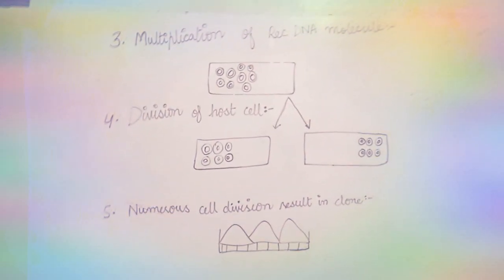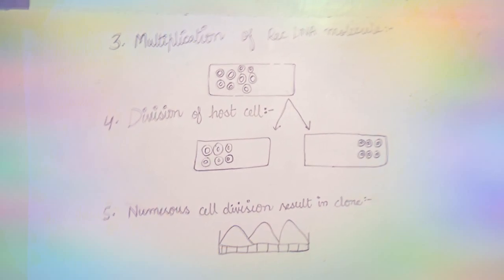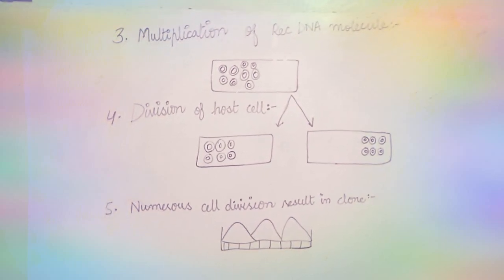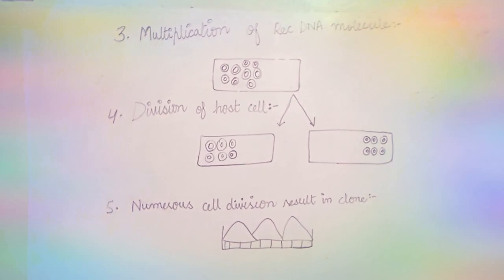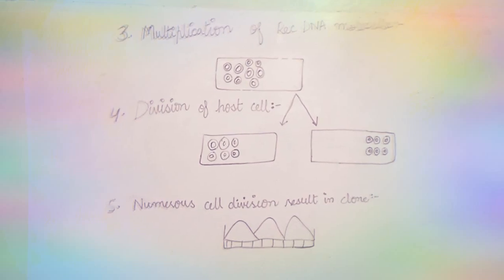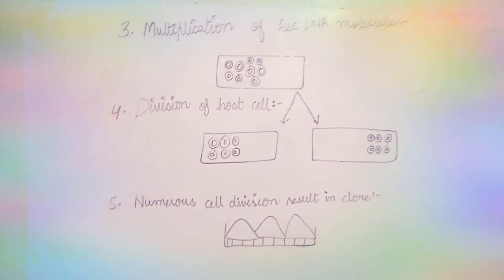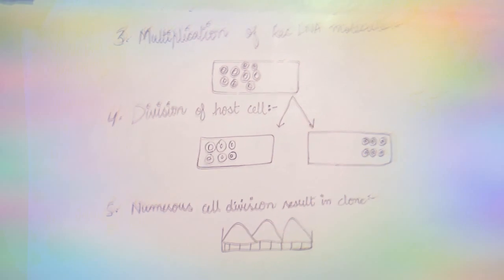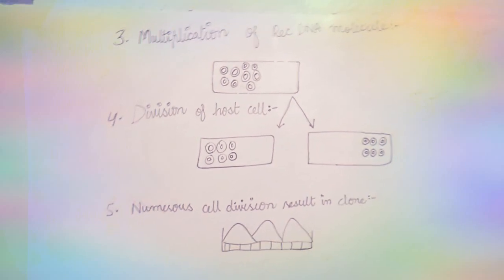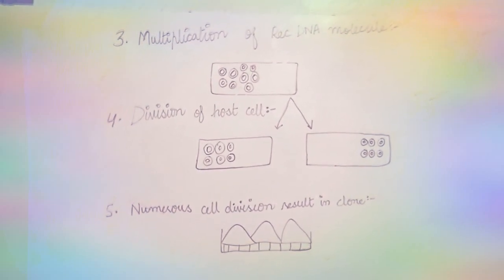After division, the fifth step is numerous cell divisions result in clone. Finally, we have clone formation, meaning identical copies are formed as required.